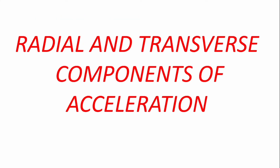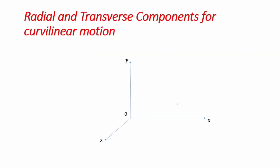Finally, we look at the radial and transverse components of acceleration for curvilinear motion. We have a particle in a curved path at point A and describe its position at every point in time by position vector r = r·eᵣ, where θ is the angle made with the axes. For radial and transverse components, we describe the position of an object using a value of radius r and an angular displacement θ.